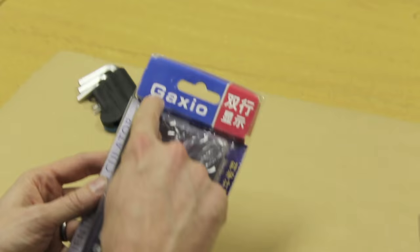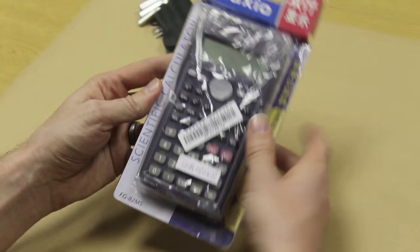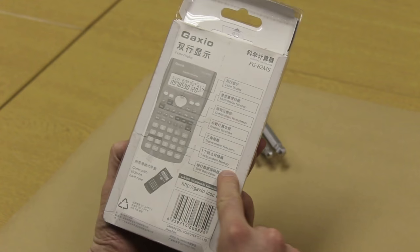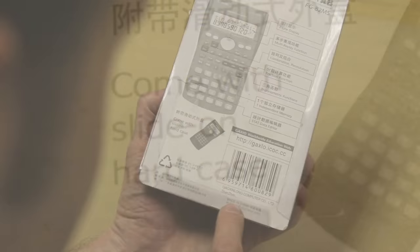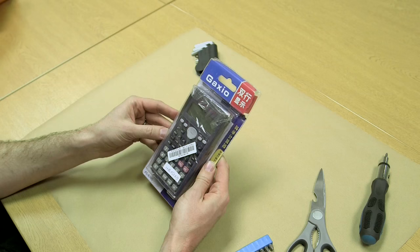On the front you can see it's a Gaxio FG82MS, very nice. It's a scientific calculator. On the back you have all the options labeled. It comes with a slide-on hard case, loving that. And down the bottom there, made in China.